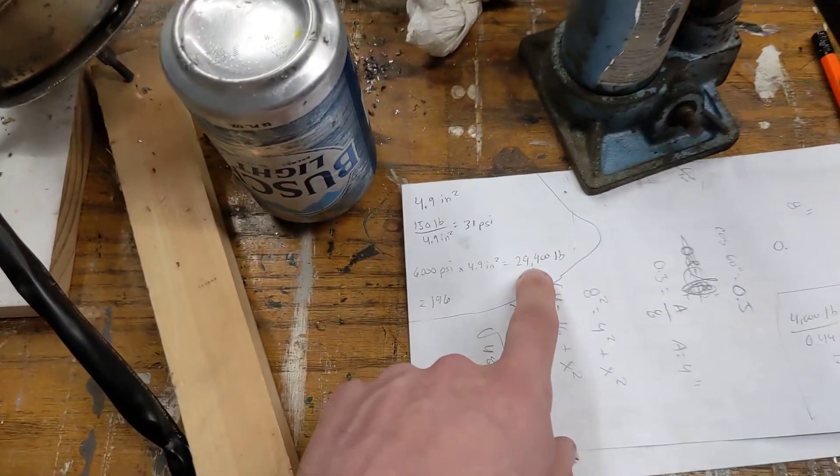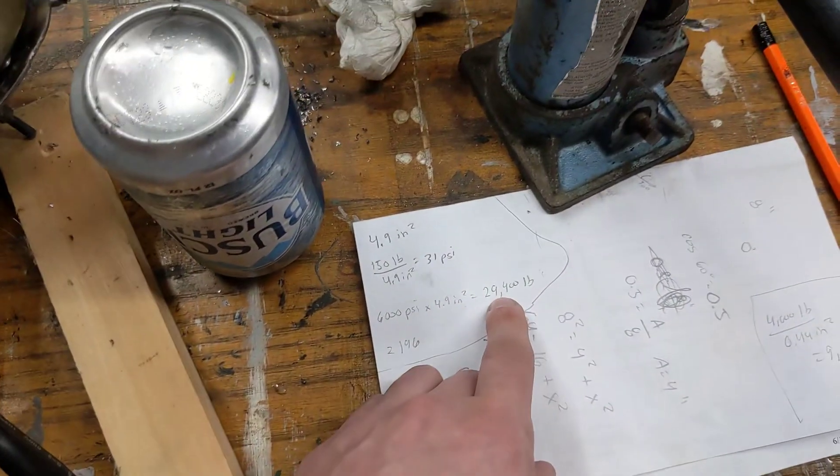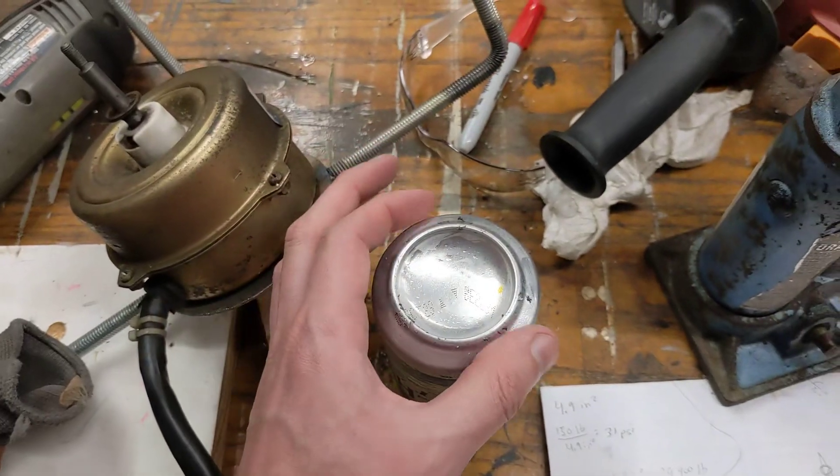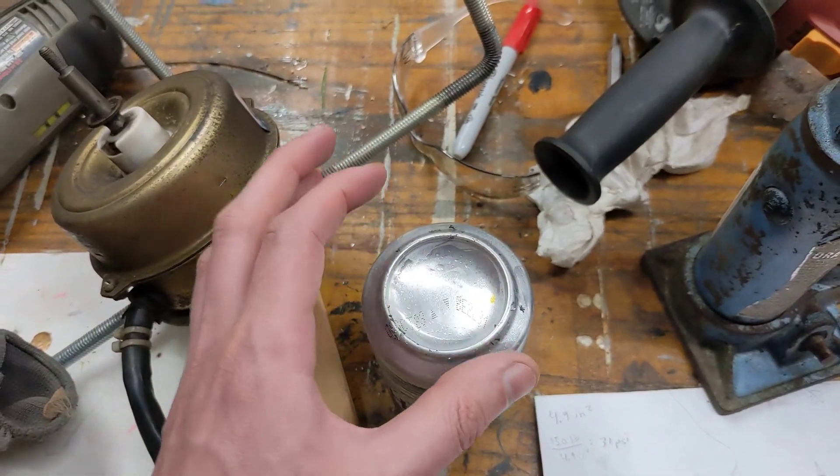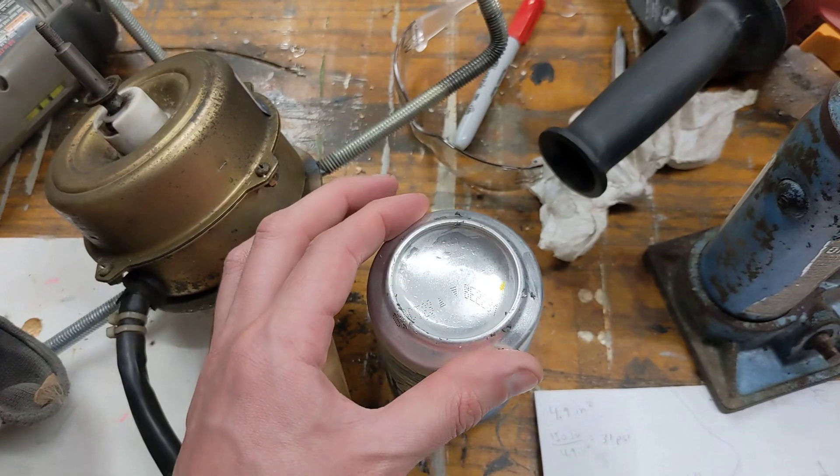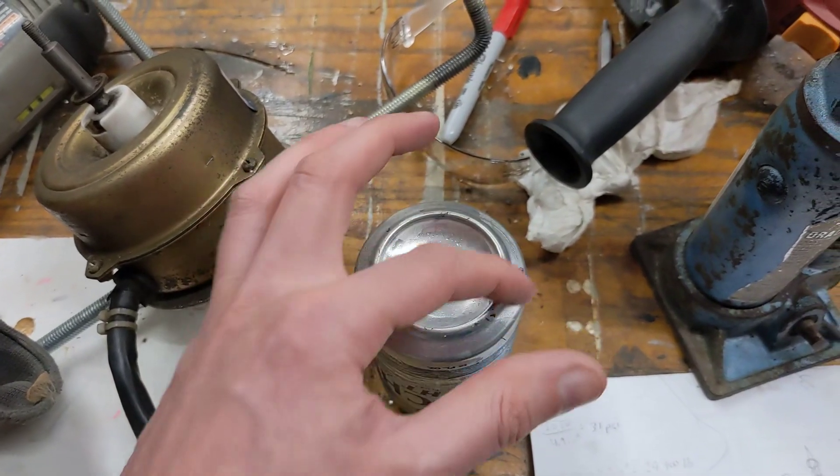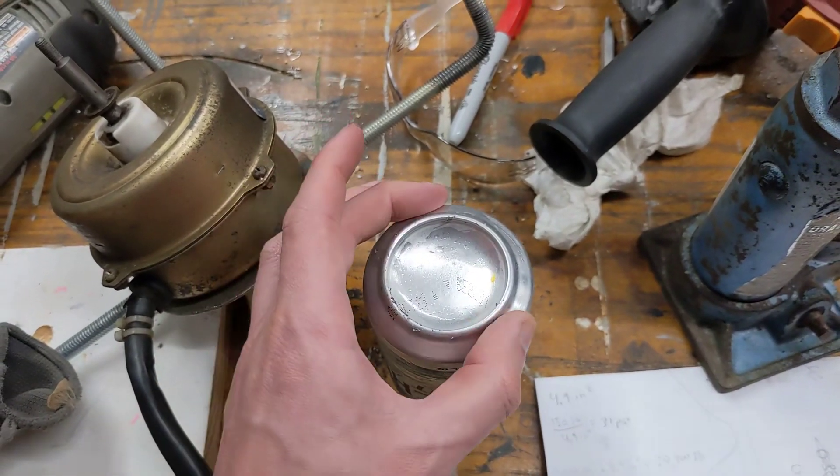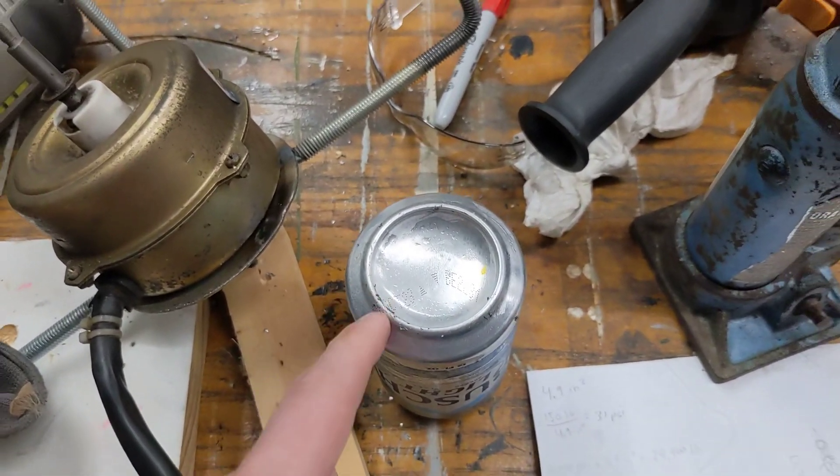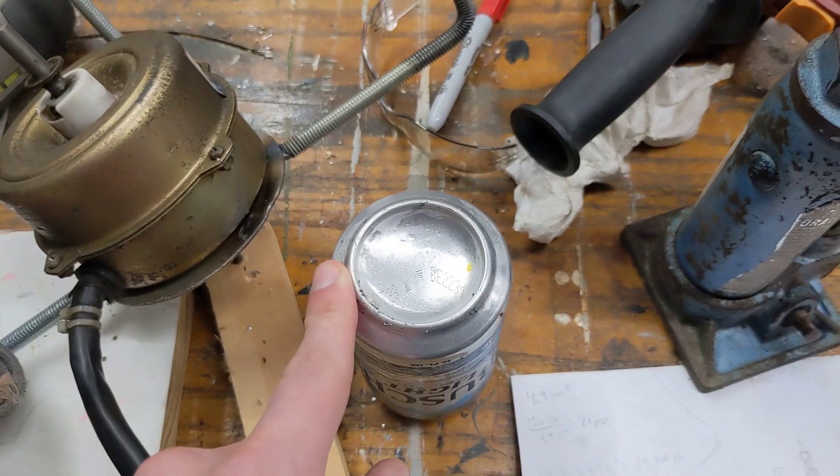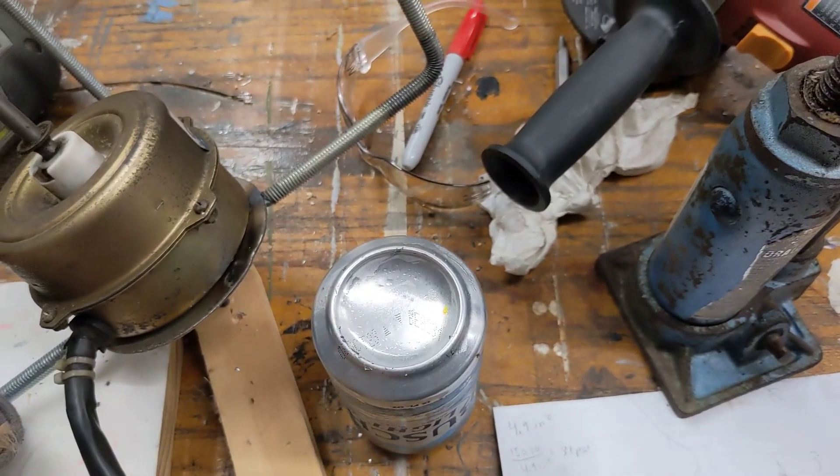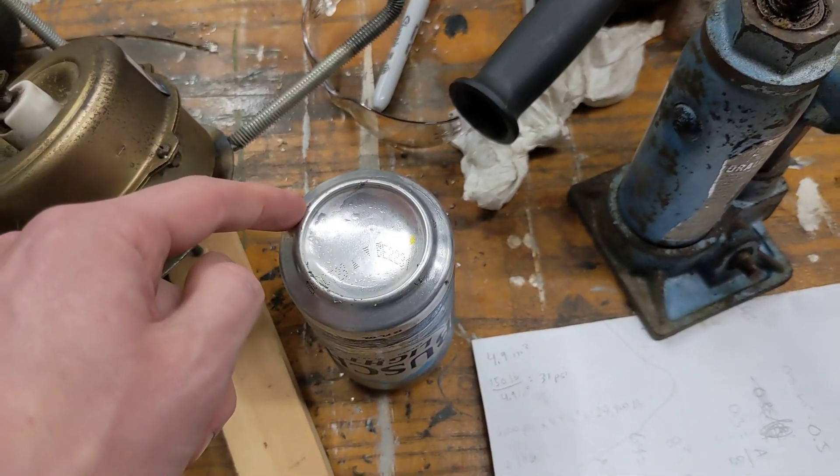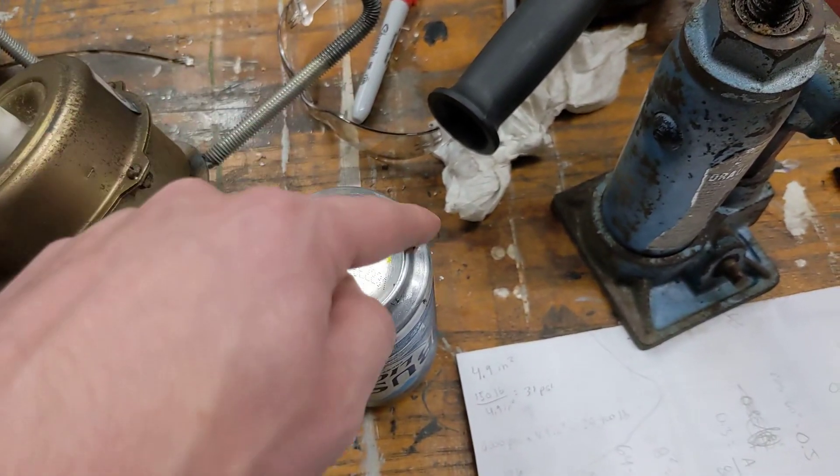If this was the submersible and this was the head, the force would be 29,400 pounds. This actual object right here, if we sent this down to that depth, this surface area that you see in this actual size would have a force on it of 15 tons. You can imagine why this is such a problem. 15 tons of weight on something this size.